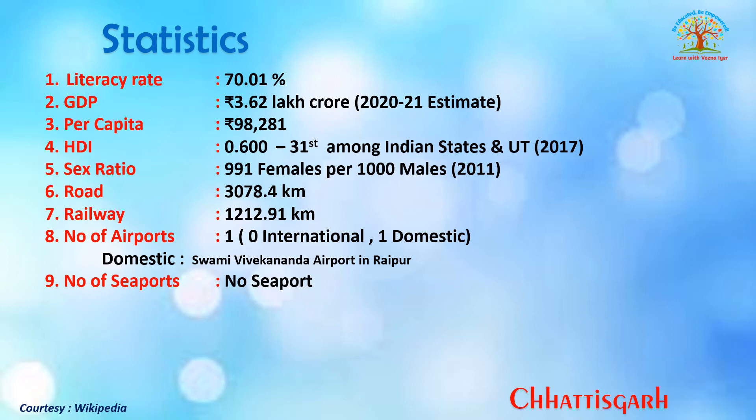Roadways extend to 3,078.4 kilometers and railways to 1,212.91 kilometers. There is one domestic airport and no international airport. The domestic airport is Swami Vivekananda Airport in Raipur, the capital. Chhattisgarh has no seaport.